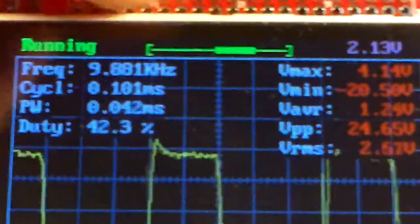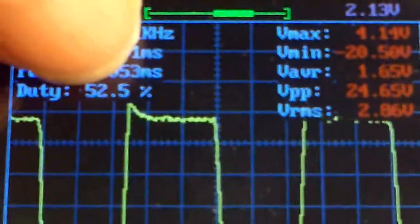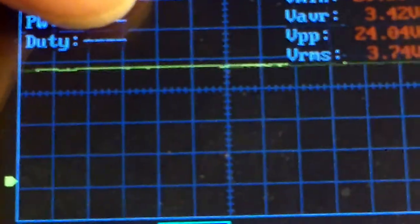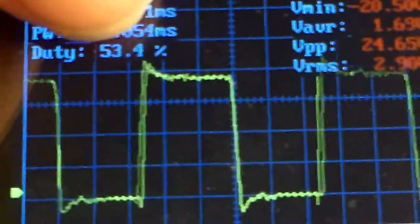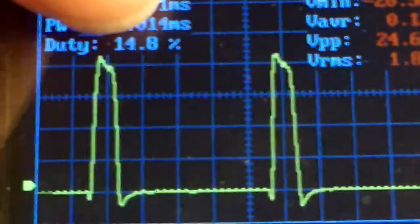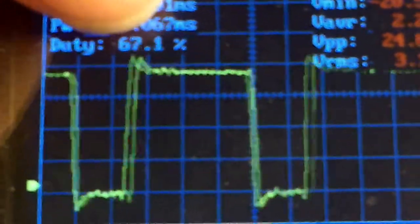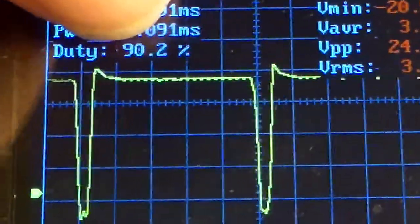One last thing: yeah, okay, so we're doing about 10 kilohertz, but down here you can see the duty cycle, the amount that it's on versus the amount that it's off. And so it's going between zero percent up to above 90 percent.